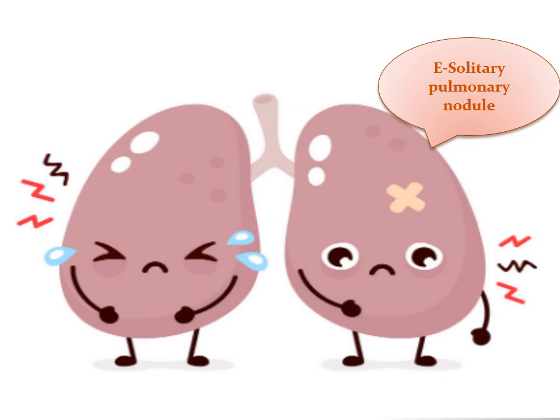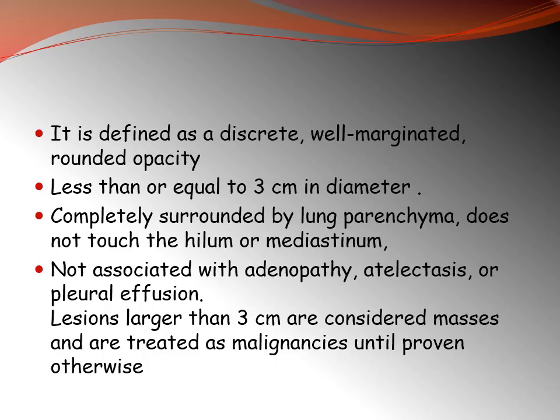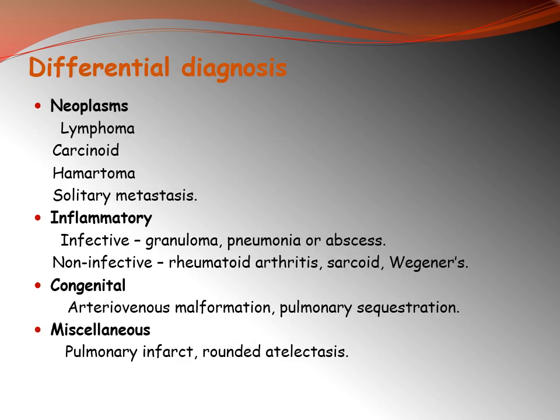Solitary pulmonary nodule is a wide-range term. A solitary solid nodule is a discrete, well-marginated, rounded opacity within 3 cm, completely surrounded by normal lung parenchyma, not touching the hilum or mediastinum, and not associated with adenopathy, atelectasis, or pleural effusion. Lesions larger than 3 cm are considered a mass and treated as malignancy until proven otherwise. The differential diagnosis for solitary pulmonary nodule may be neoplastic, inflammatory, congenital, or miscellaneous.